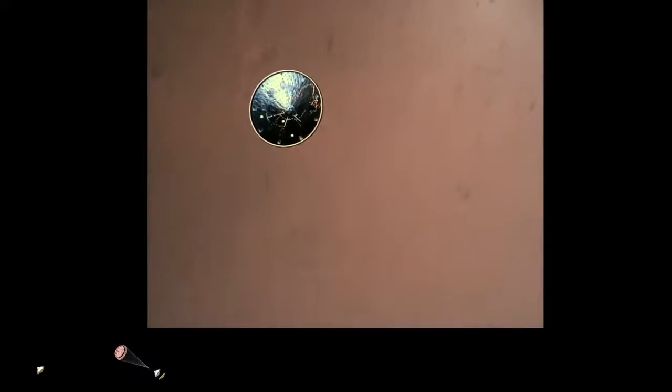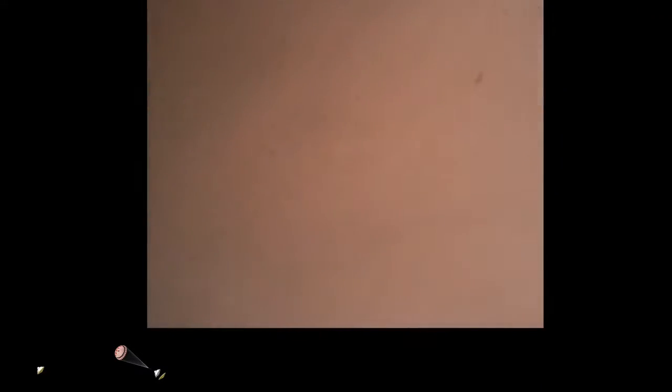Heat shield separated. Perseverance has now slowed to subsonic speeds, and the heat shield has been separated. This allows both the radar and the cameras to get their first look at the surface. Current velocity is 145 meters per second at an altitude of about 9.5 kilometers above the surface.